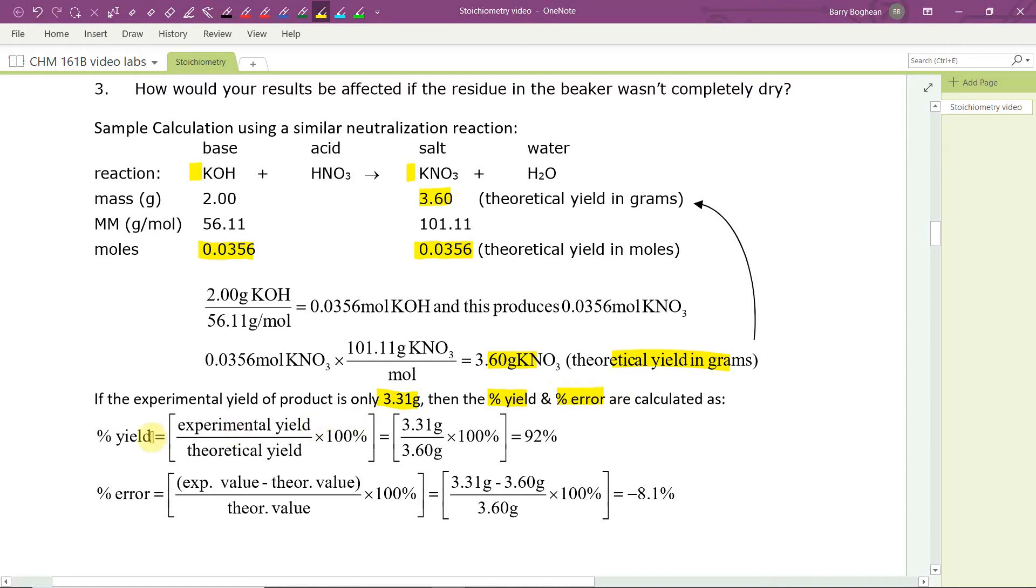Now, the percentage yield is simply the experimental or actual divided by theoretical or true times 100%. So we actually measured 3.31 grams. Theoretically, we should have had 3.60, times 100%. We get a 92% yield.